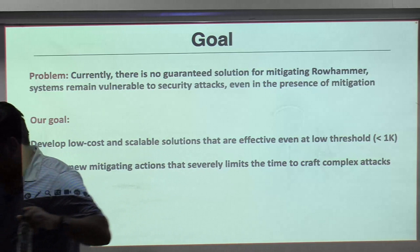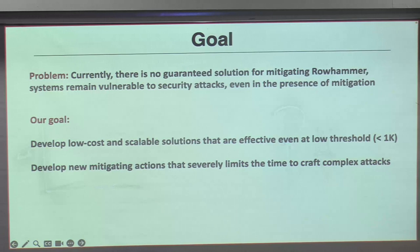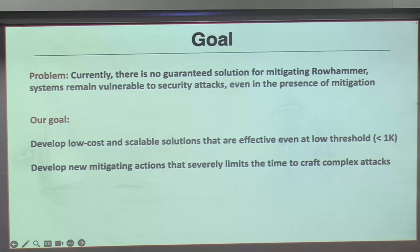Q: Who tracks and who issues the mitigation? The TRR implementation I mentioned is an in-DRAM mitigation. The problem is that in-DRAM mitigations can only afford about 16 tracker entries. If you have 1,000 aggressor rows and only 16 entries, it's easy to break. You can have more entries at the memory controller, but even that becomes costly.